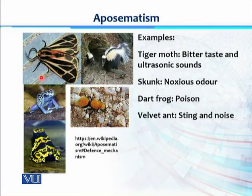One example is the tiger moth, which has a bitter taste making it unprofitable for predators. Once a predator tries to catch it, other than the bitter taste, it starts producing ultrasonic sounds. The combination of these sounds and taste threatens the predator further, increasing the intensity of the warning signal.